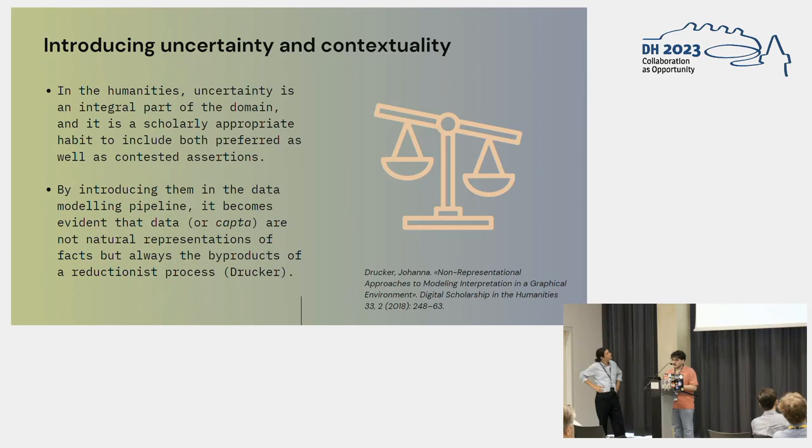In humanities in general, uncertainty is absolutely an integral part of the domain. It is appropriate and a habit of philologists and historians to present multiple types of information on the same thing or contesting information or debated data. By introducing them in the pipeline of RDF graphs and the semantic web, it is evident that data is not anymore something we just get from the world outside, but we interpret it. It is the result of a realistic process that generates constructive information. That is called also by Johanna Drucker, capta, something that is taken and interpreted and created by a human person.